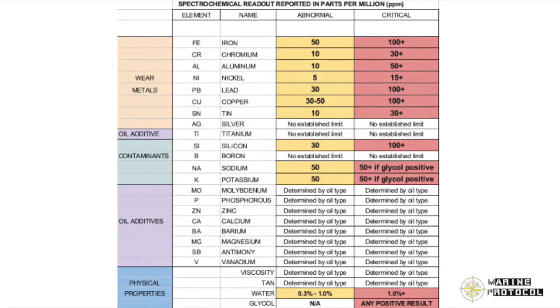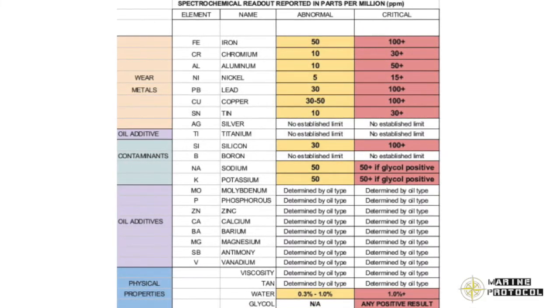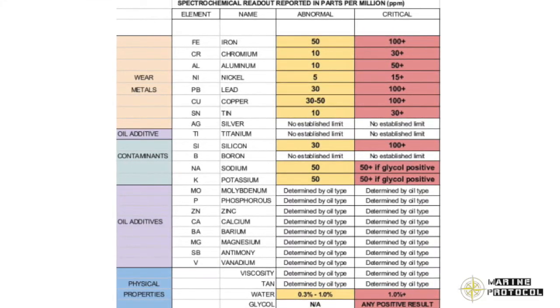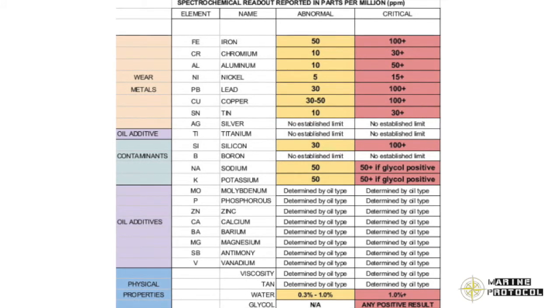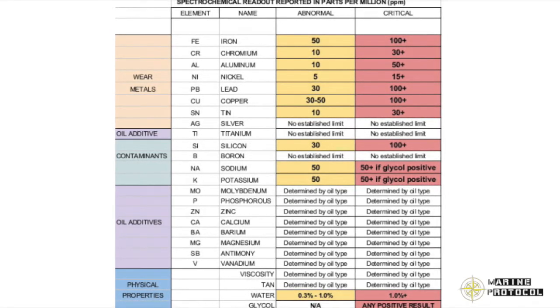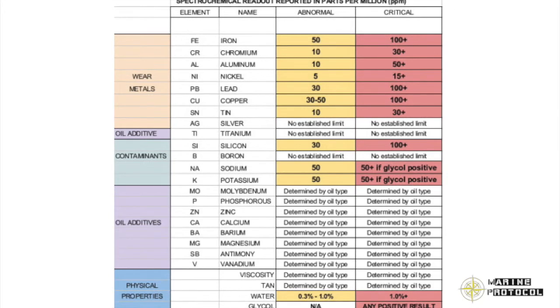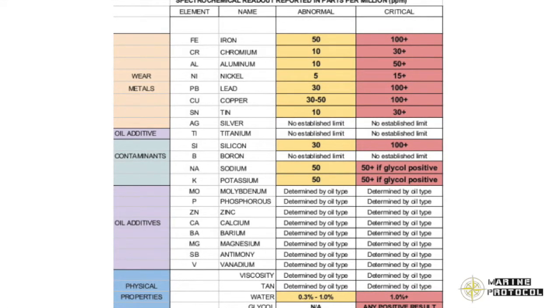Contamination limits — specific gravity change: 5%. Fuel oil contamination: 0.5%. Water contamination: 0.2%. Carbon content: 1%.